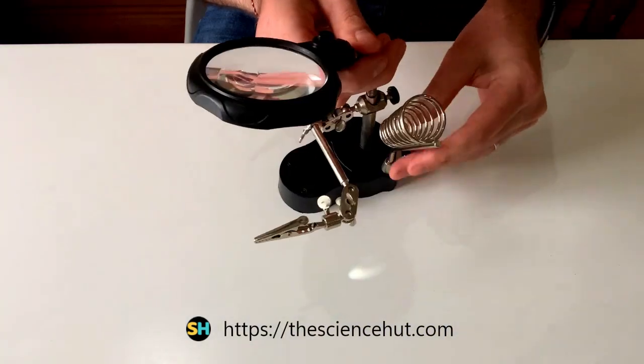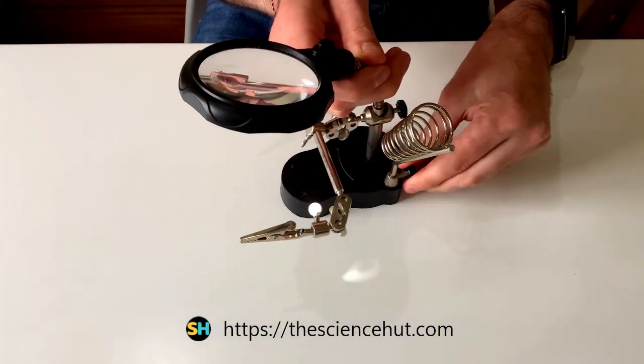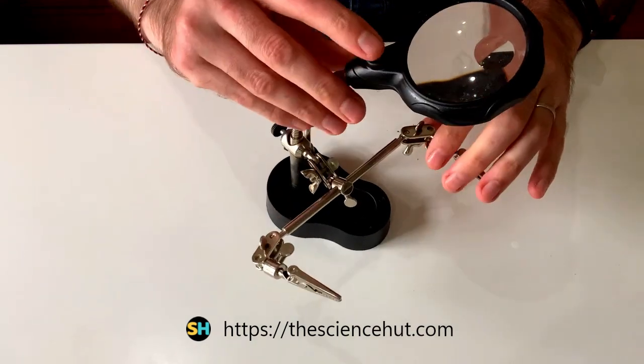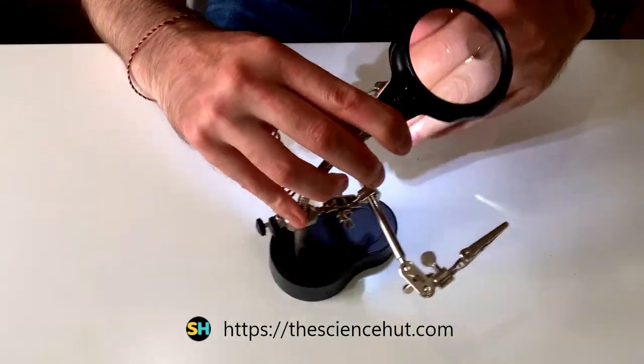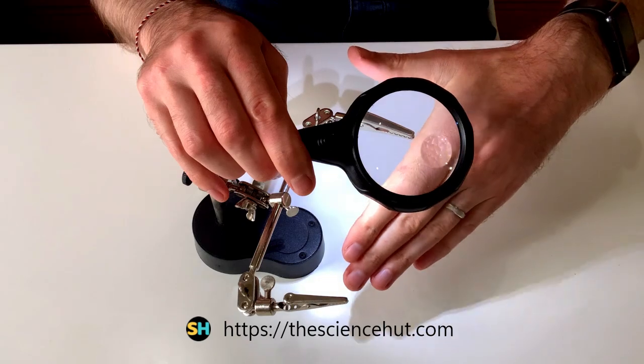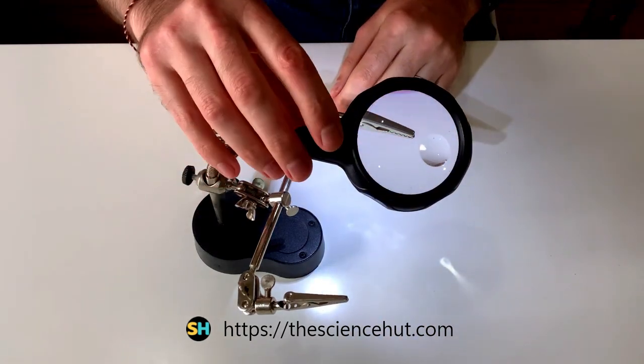It also often comes with a lighted magnifying glass, and even a soldering iron holder. It's not an essential tool but it can be very useful for close inspection of your work and can make assembling small circuits much easier.